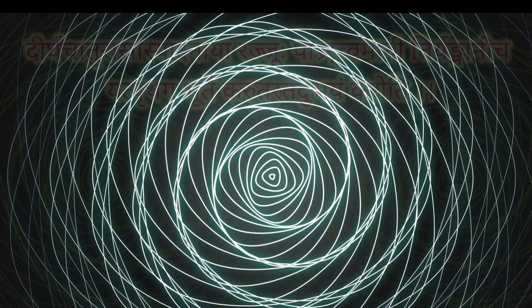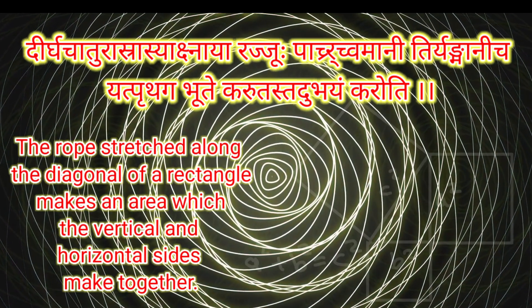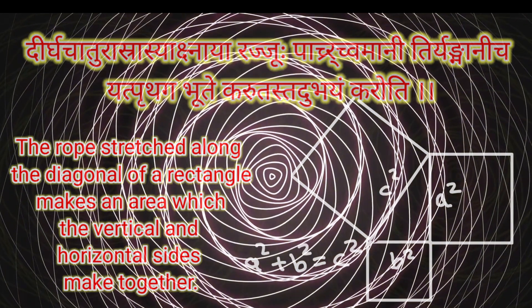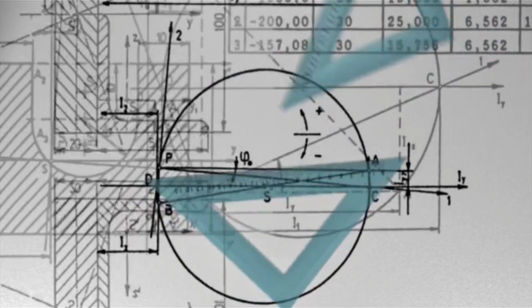This is the shloka in Baudhāyana's Shulba Sutra. This clearly states that the rope stretched along the diagonal of a rectangle makes an area which the horizontal and vertical sides make together. This is exactly what Pythagoras said three centuries later.